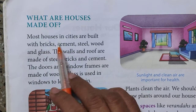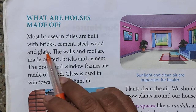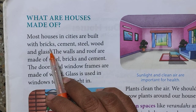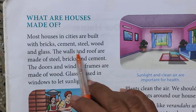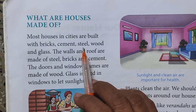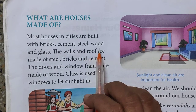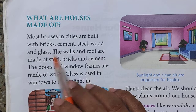Most of the houses in the cities are built of bricks — bricks means 'Vita' in Marathi — cement, steel (which means iron bars), wood and glass.